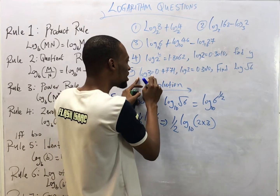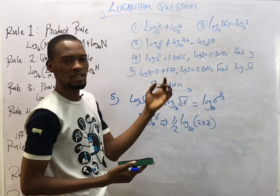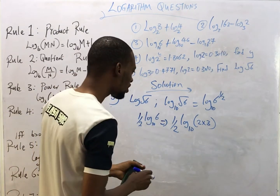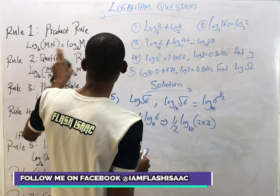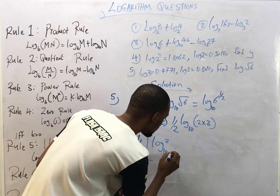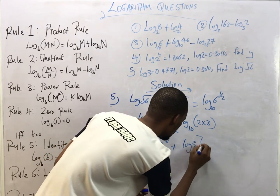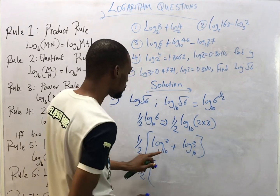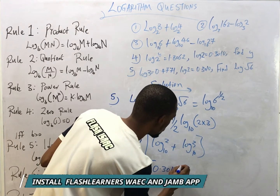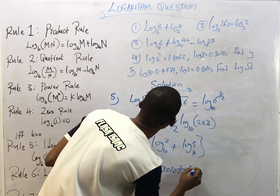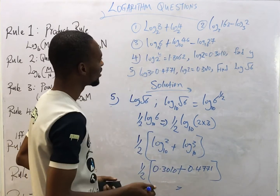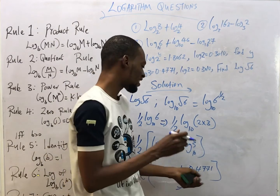I'm breaking it down to obtain log 3 and log 2 so I can substitute, since we are asked not to use tables. From the product rule, once we have a product inside the log, we can split it into addition: (1/2)·[log₁₀(2) + log₁₀(3)]. Substituting the given values, this is (1/2)·[0.3010 + 0.4771]. Adding and multiplying by one half gives the final answer.